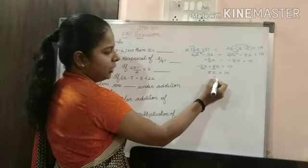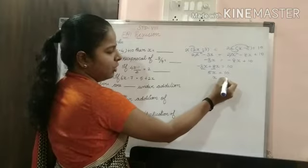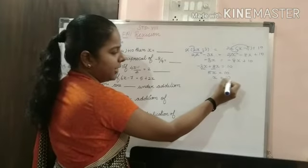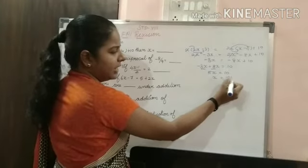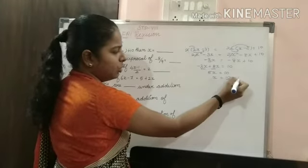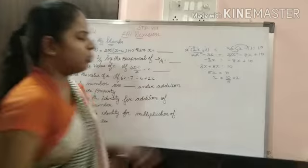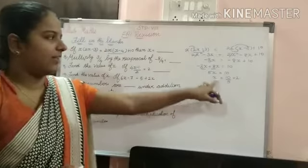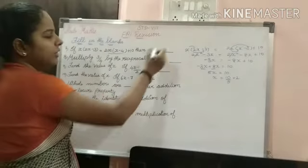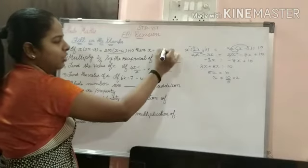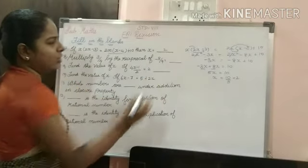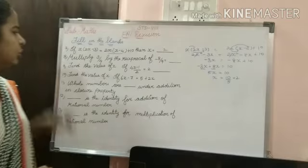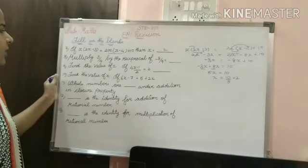So x is equal to 10 divided by 5, which is equal to 2. The value of x is equal to 2. Understand, students.